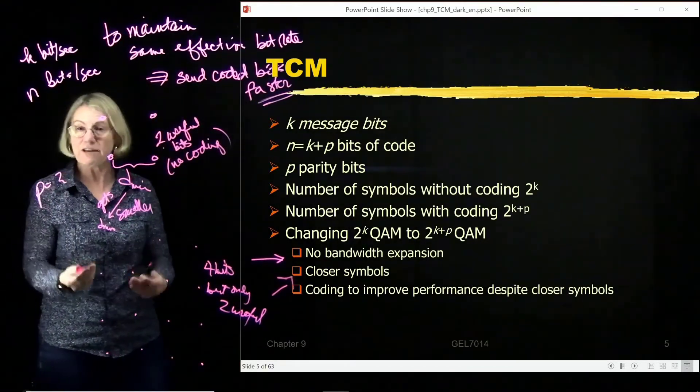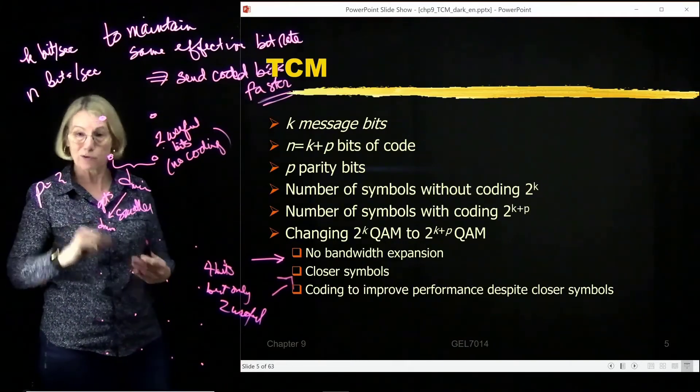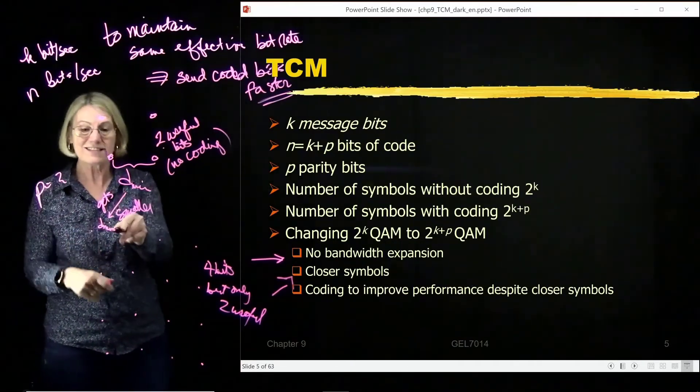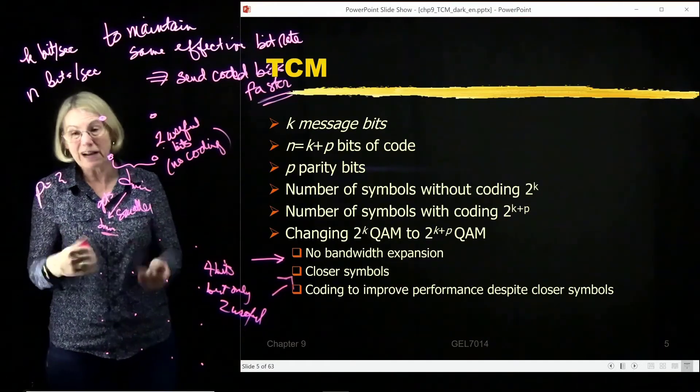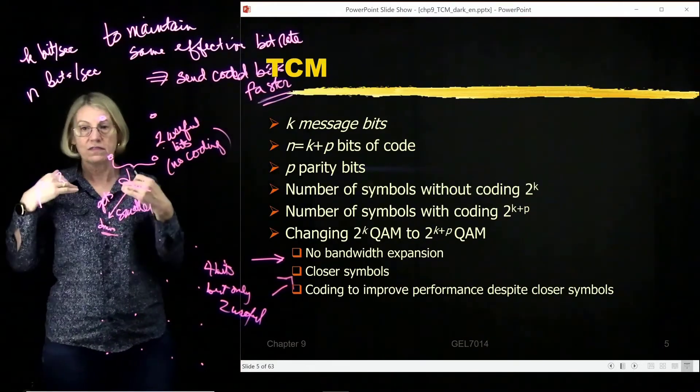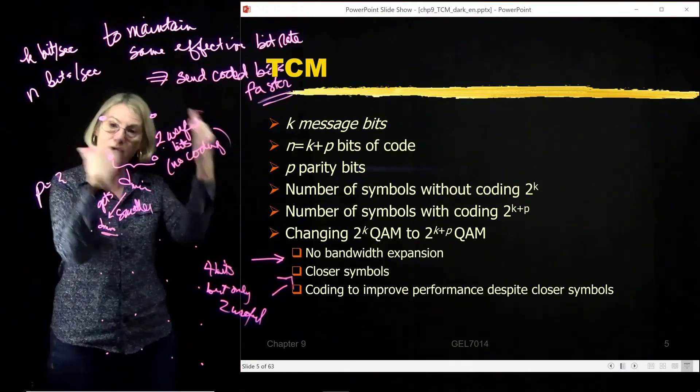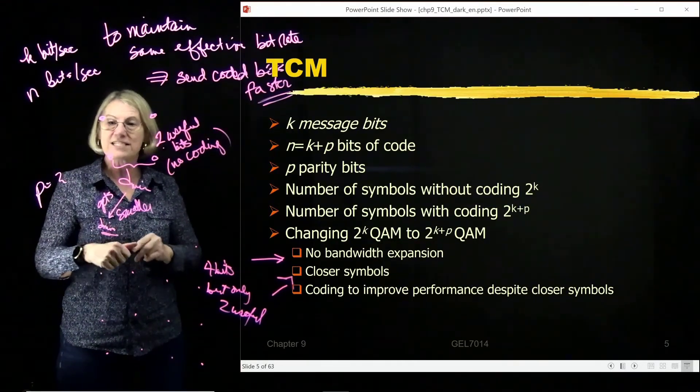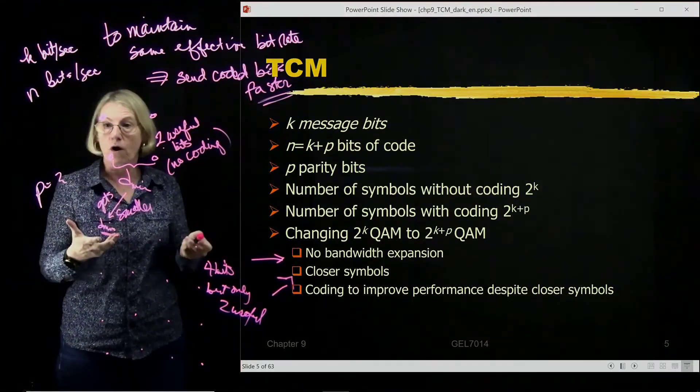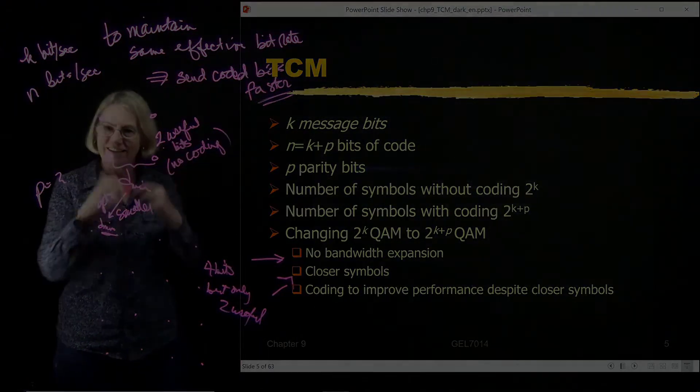But of course, I'm giving it parity bits. I'm correcting errors. So the fact that this dmin is smaller, I'm going to make more errors, but I'm going to correct them. And so the net effect is very positive. And so that's why trellis-coded modulation is a good strategy, and a very popular one in communications.